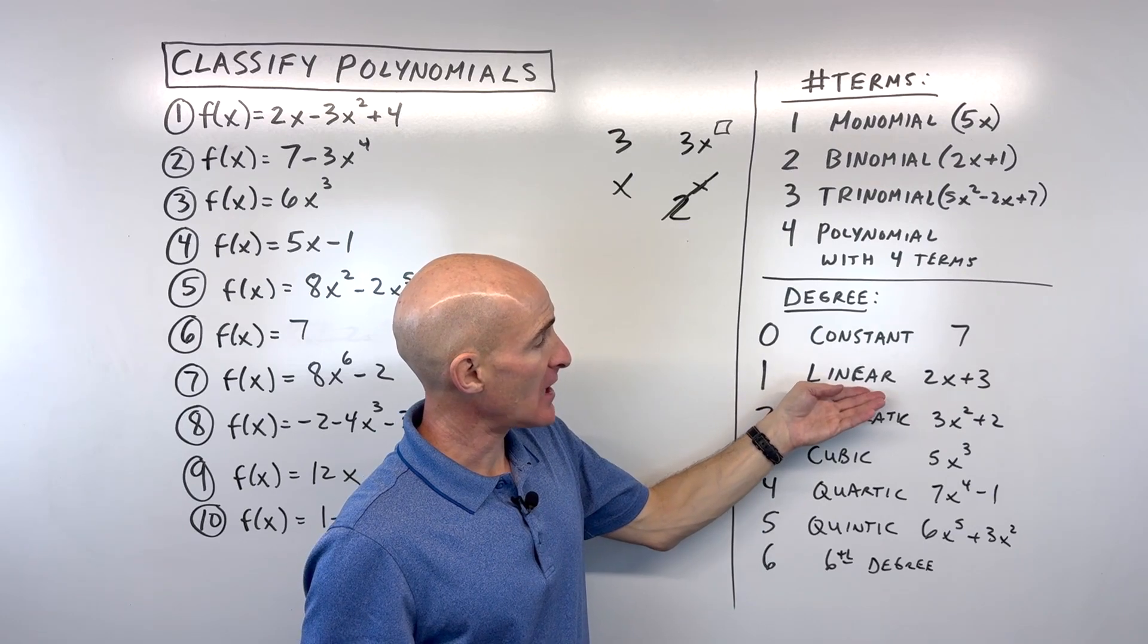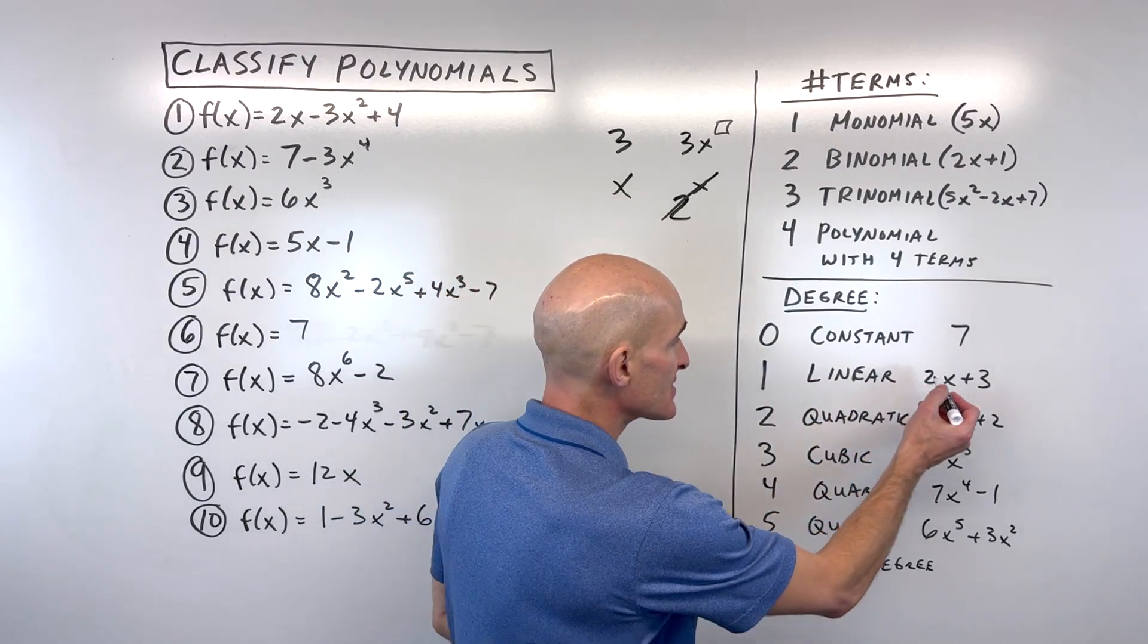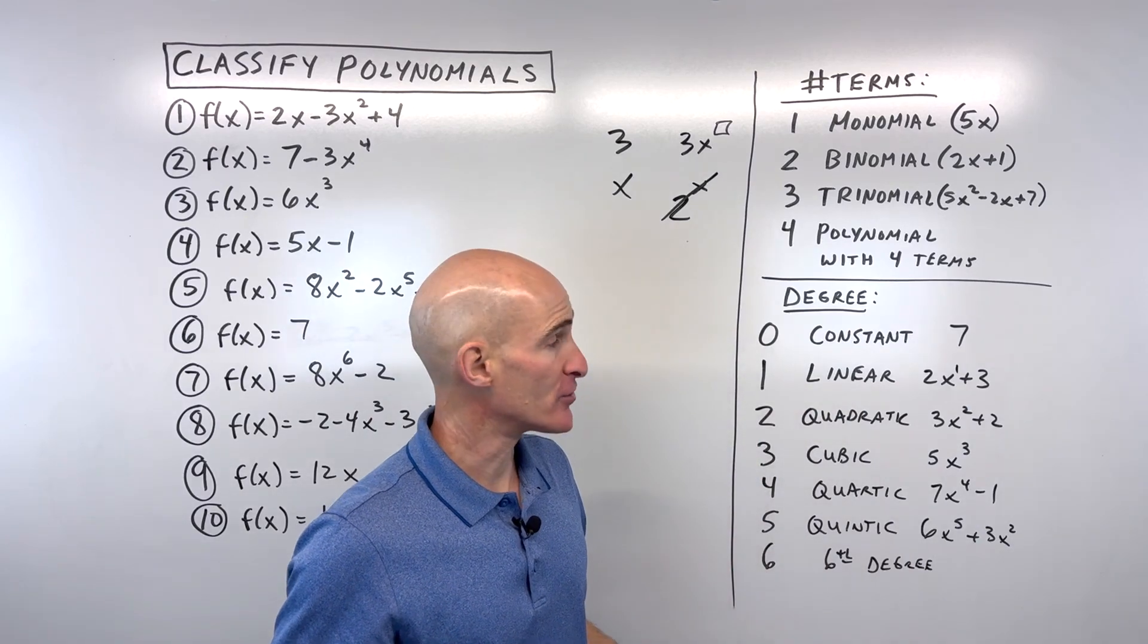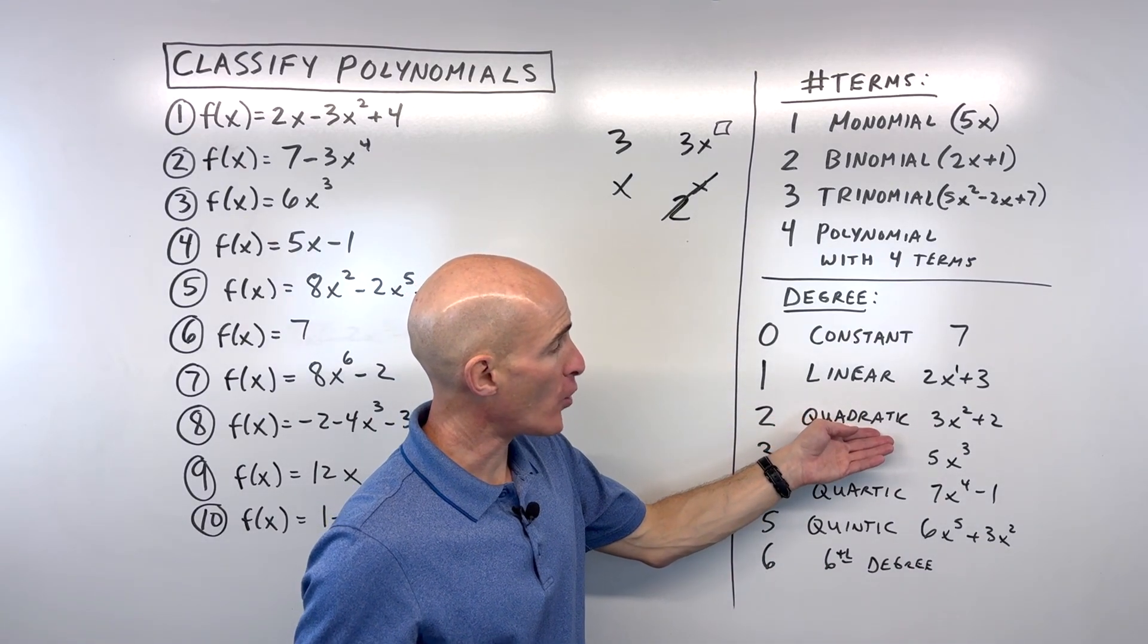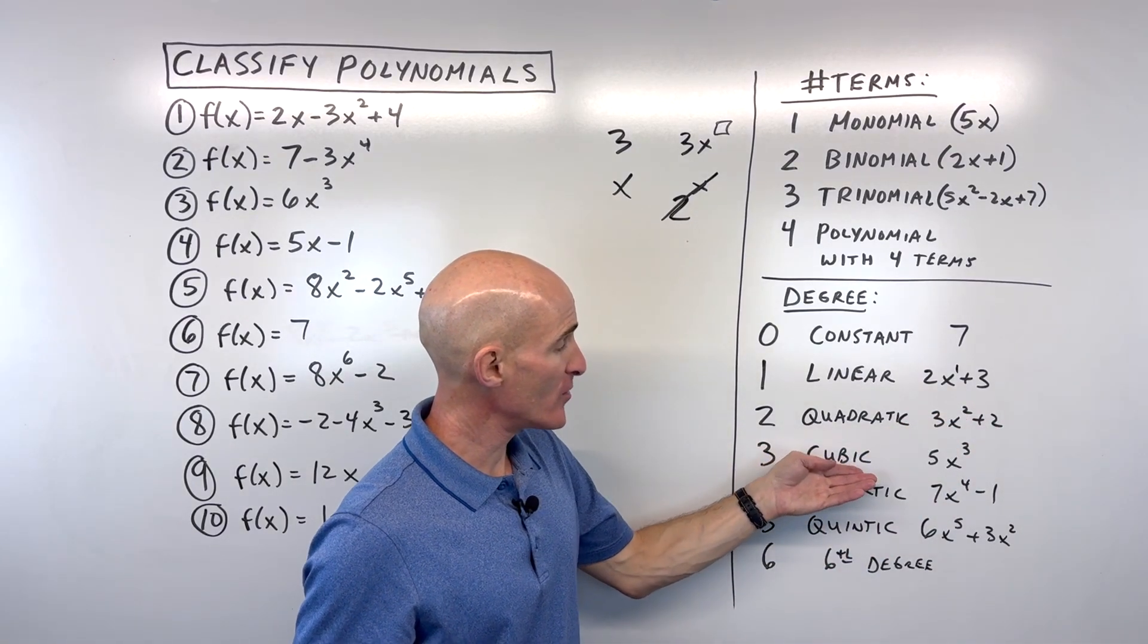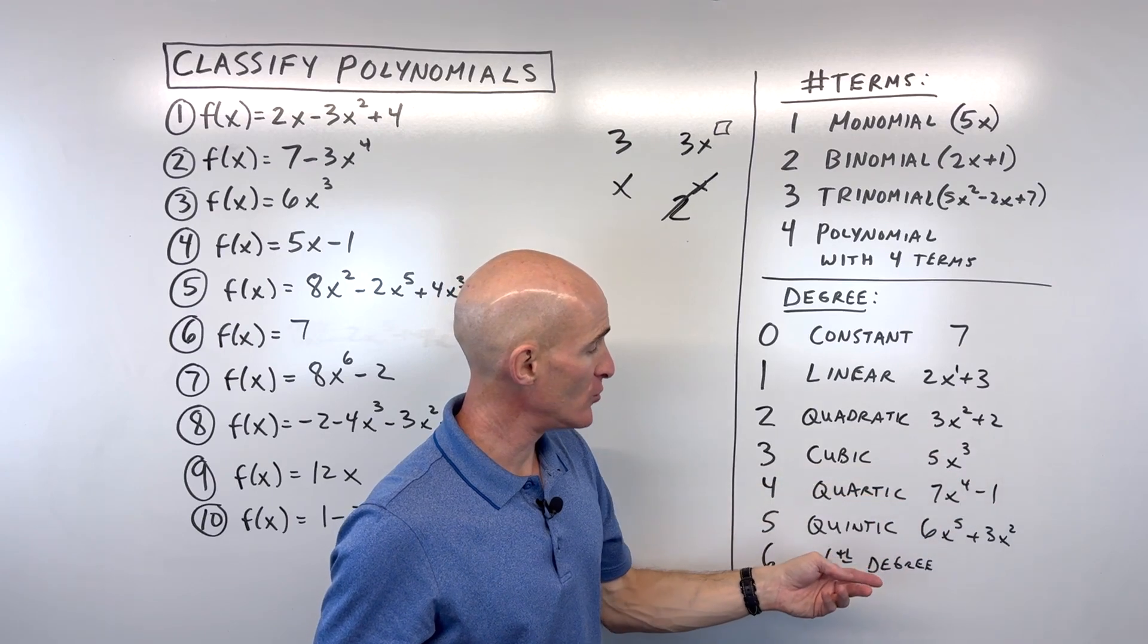But if it's a first degree, the type is linear. And you can see this is like a line. See how that's to the first power, the first degree. Now if it's a second degree, we call it a quadratic. See how 3x squared plus 2, that highest exponent is a 2. Third degree, we say cubic. 5x cubed is an example.